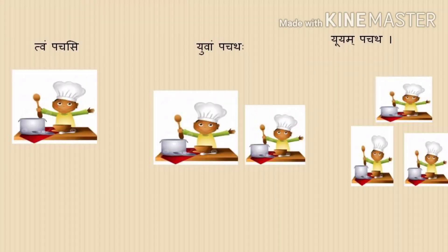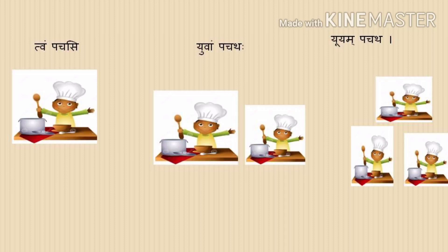Let us look at some more examples. Look at the picture — what is he doing? He is cooking. What do you say for cooking in Sanskrit? Pach — to cook. When you say 'you are cooking': Tvam Pachasi. When two cooks are cooking: Yuvam Pachathaha, 'you both are cooking'. If many are cooking: Yuyam Pachatha, 'you all are cooking'.